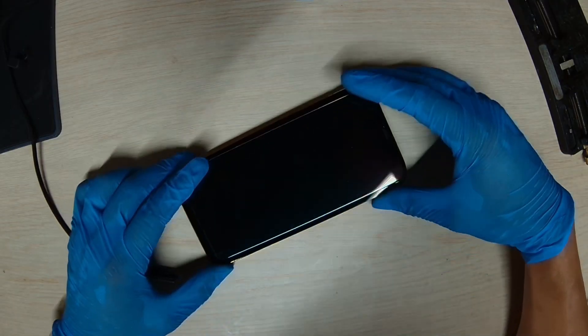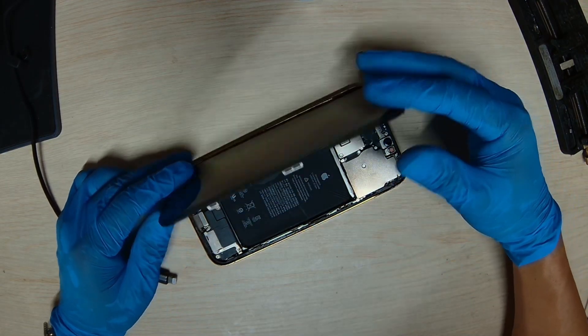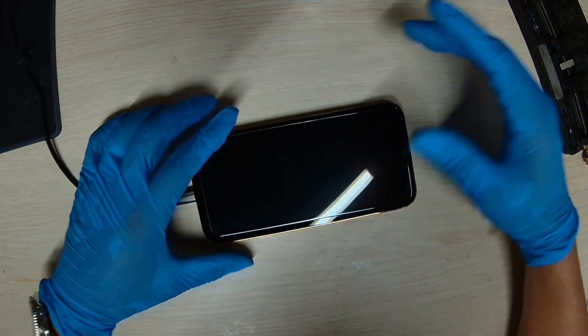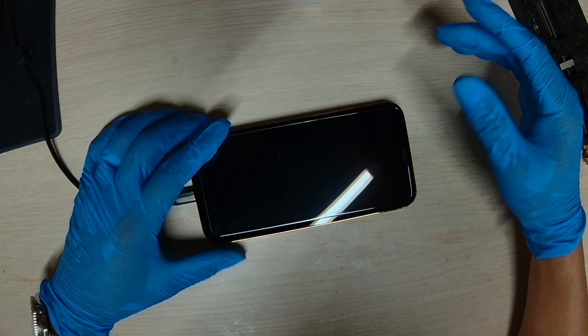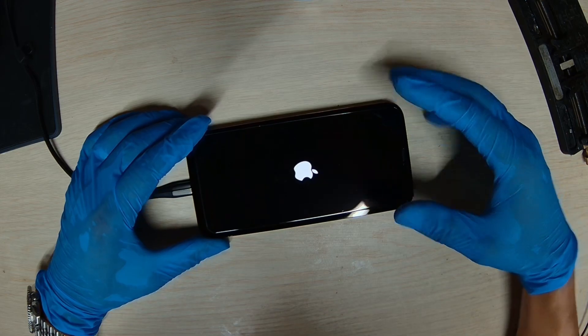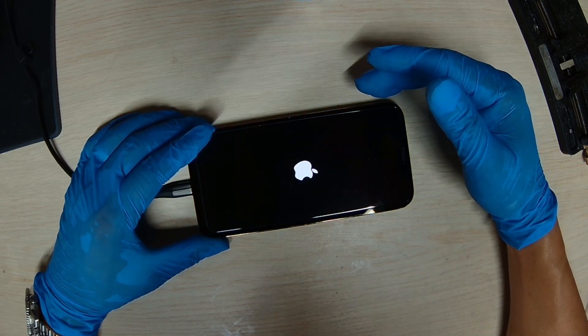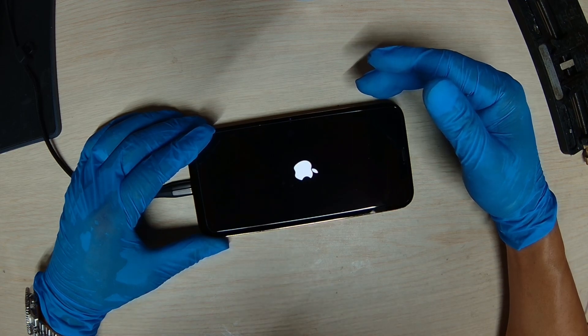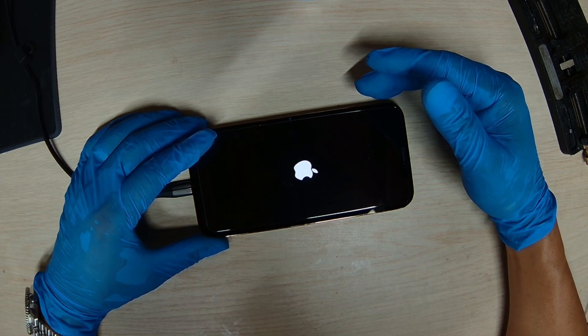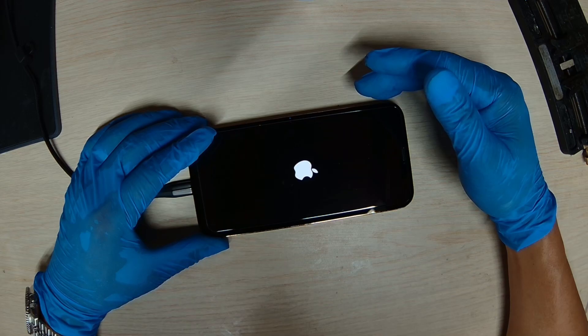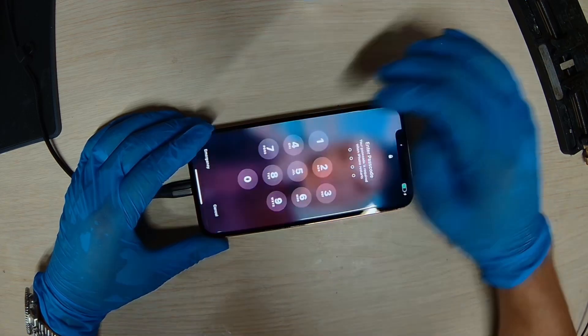Okay we put the board back to the housing. Let's test it to see if it powers up. It should power up because we already tested earlier. This phone is charging at 2.2 amps which is good. It's booting up at the normal boot sequence. Okay. So phone is working fine.